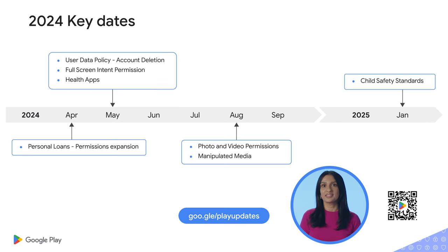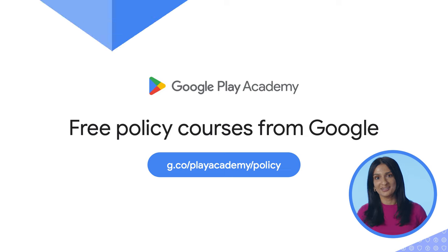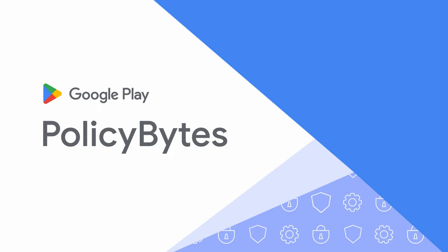Finally, let's take a look at some upcoming deadlines. For policies that may take developers more time to comply with, we've been mindful to give you more advance notice. For a full list of recent policy updates, please visit the link on your screen. We encourage you to review these updates carefully in case any of them affect your apps. I hope this helped you understand our recent policy updates. To learn more, visit Google Play Academy for free courses on all things Google Play, from understanding our deceptive behaviors policy to running effective price experiments for in-app products. Thanks for watching and for helping us make Google Play a safe and trustworthy platform for everyone.